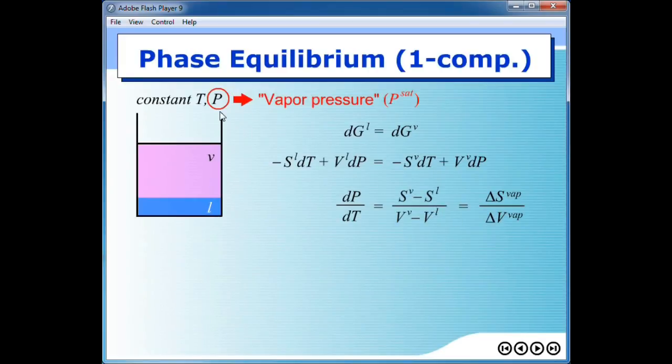In this case, the pressure, whenever we have two phases for one component system, the pressure here is called vapor pressure or saturated pressure. So P here would be written as P sat.